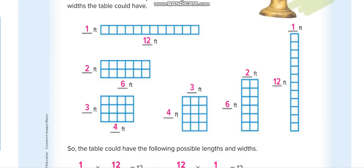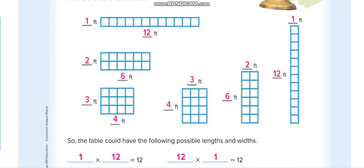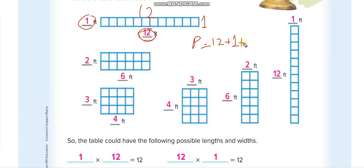This rectangular figure has a width of 1 foot and a length of 12 feet. Since opposite sides are equal, the other length is also 12 and the other width is also 1. To find the perimeter, we add all the sides: 12 plus 1 plus 12 plus 1.